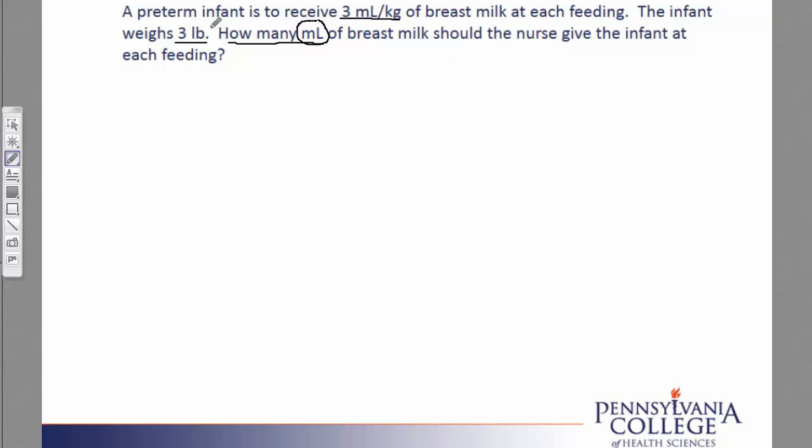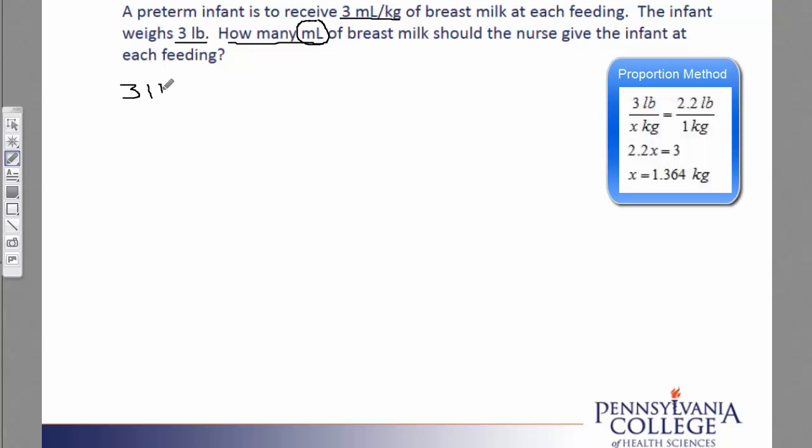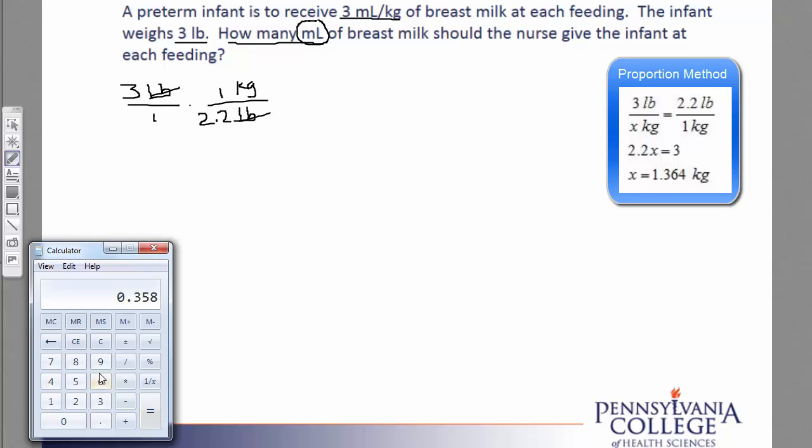Our first step is to convert the weight from pounds to kilograms. So 3 pounds is given to us. We know our conversion that there are 2.2 pounds to 1 kilogram. And we'll go directly to our calculator to do the calculation. So 3 divided by 2.2 equals.